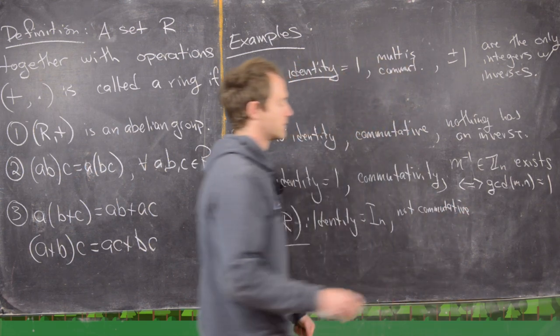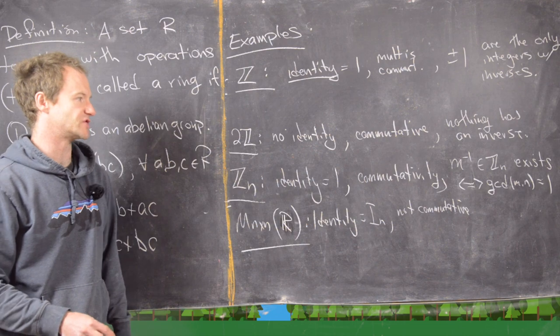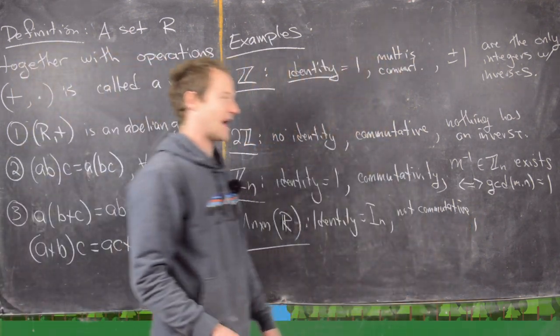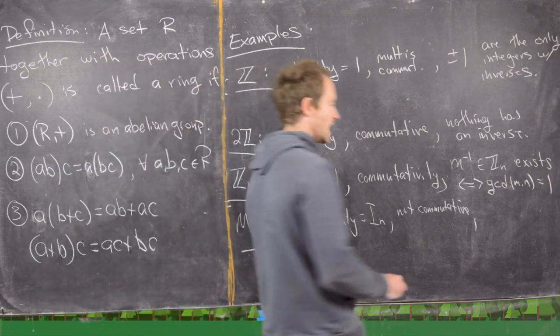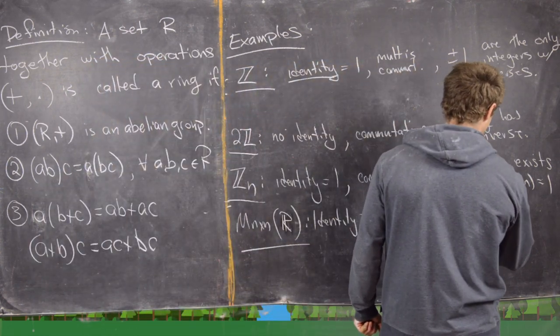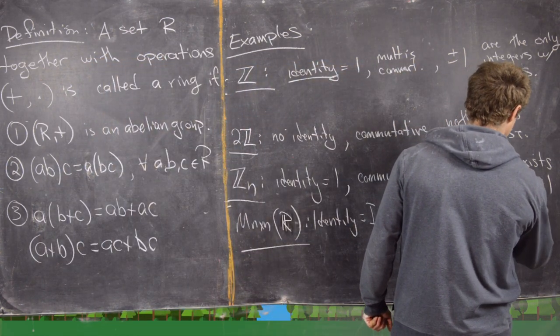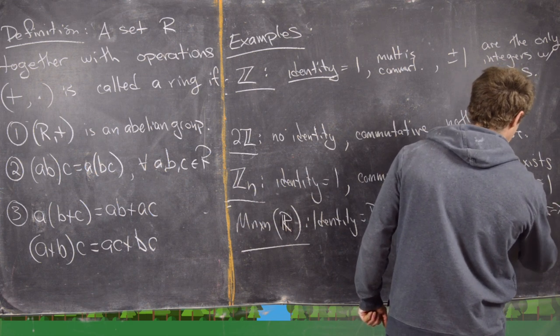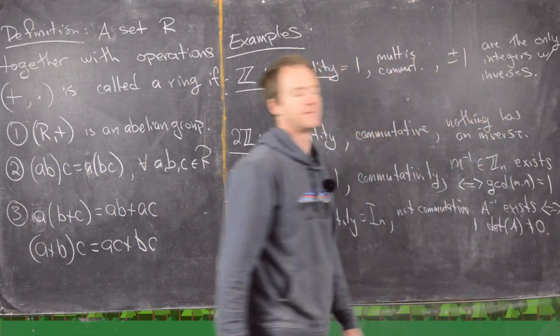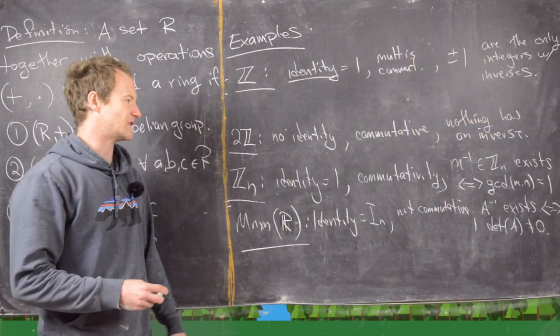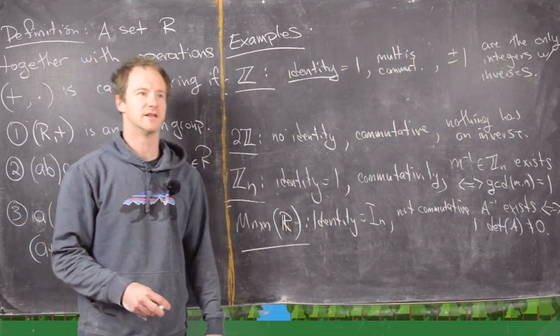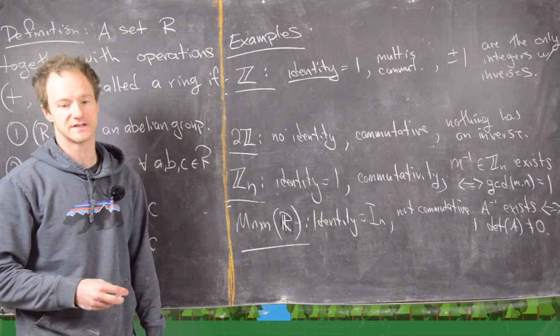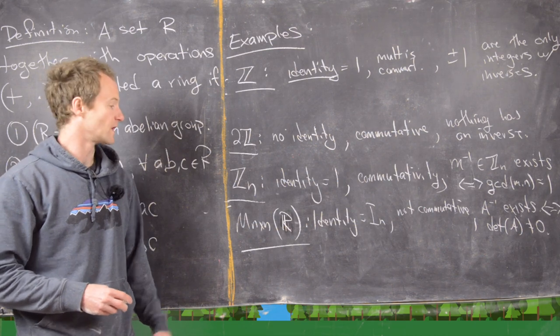So it's well known from linear algebra that matrix multiplication does not commute. But then a bunch of things do have multiplicative inverses. And let's say it like this. So A inverse exists if and only if the determinant of A is not equal to zero. And then by the invertible matrix theorem, which is something you learn in linear algebra, there are lots of ways to say if A inverse exists or not.